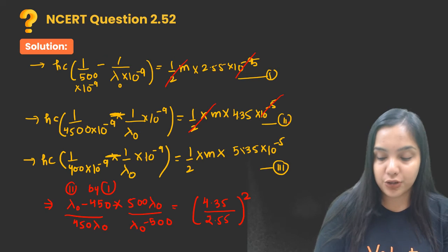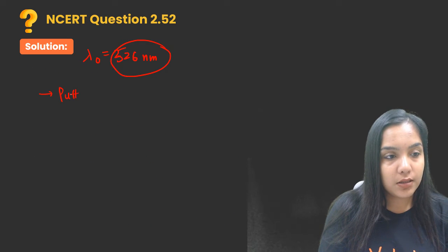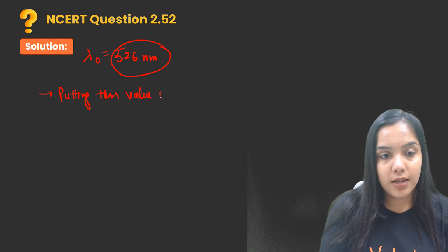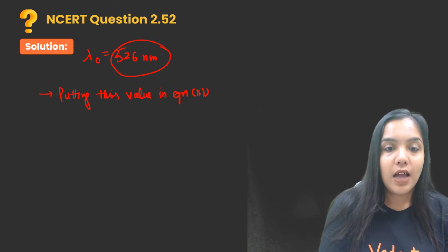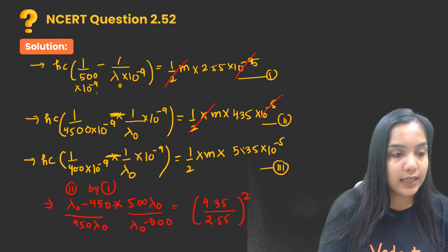After doing this, what will I get? hc. h value we need to find, what is the value of c? 3 into 10 raised to power 8, into 1 upon 400 into 10 raised to power minus 9 minus 1 upon 526 into 10 raised to power minus 9.